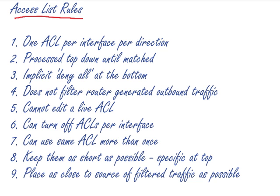I see a lot of very convoluted access lists with 20 lines when you could get away with three or four, believe it or not. So this is part of the skill. Number nine: place them as close to the source of the filtered traffic as possible. So if you're filtering traffic from your local area network or coming in from the internet, you will place the access list in different places.